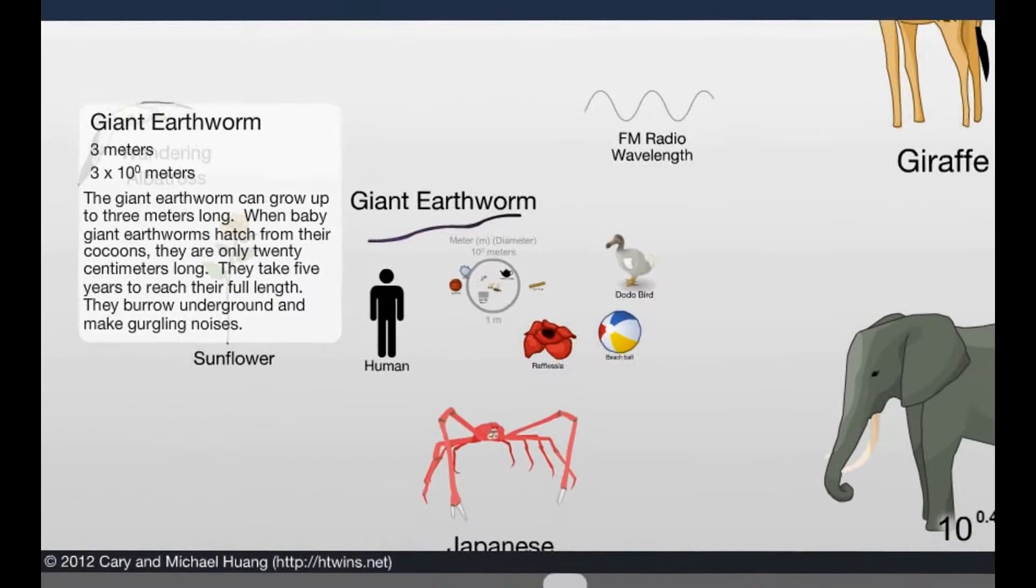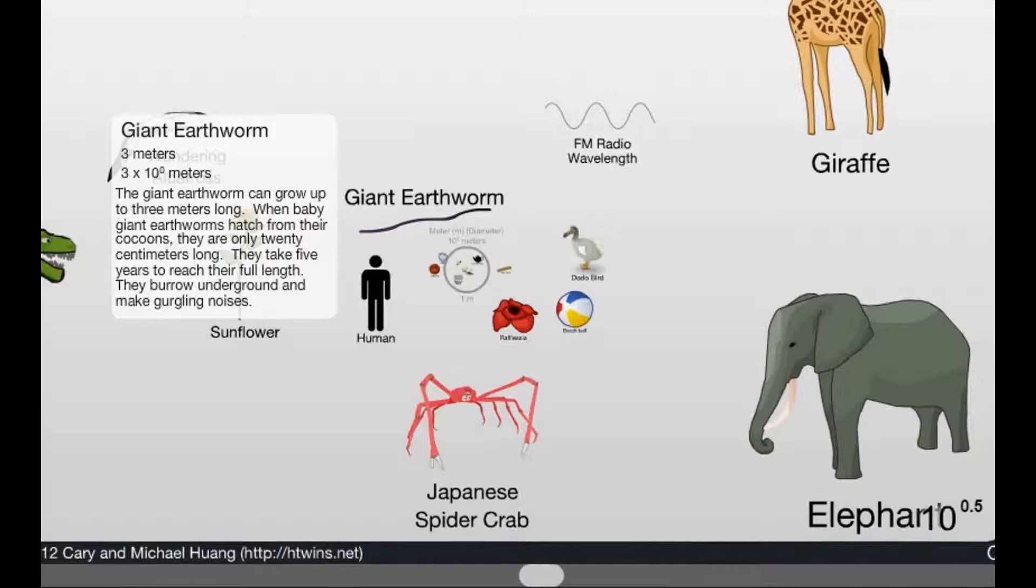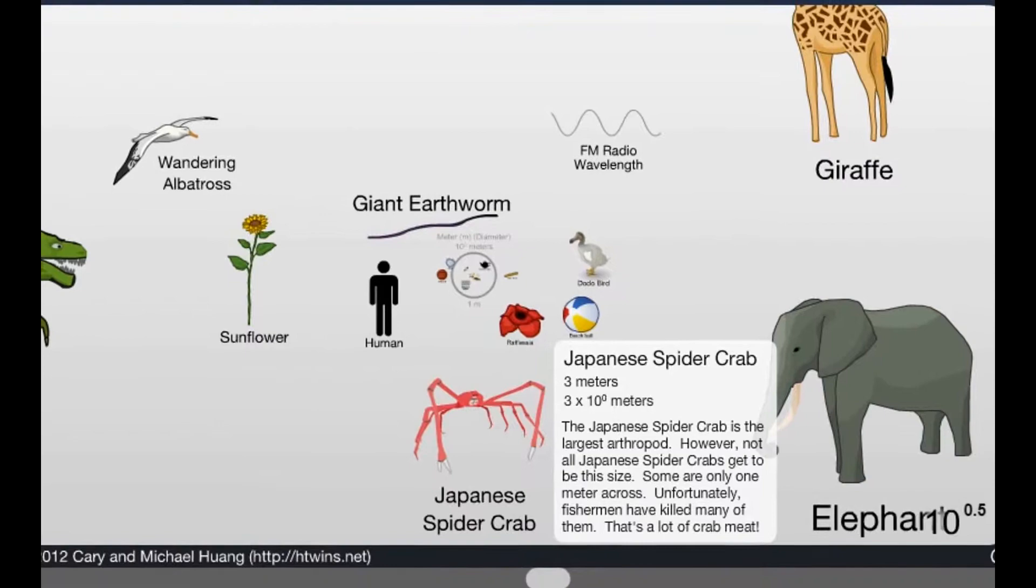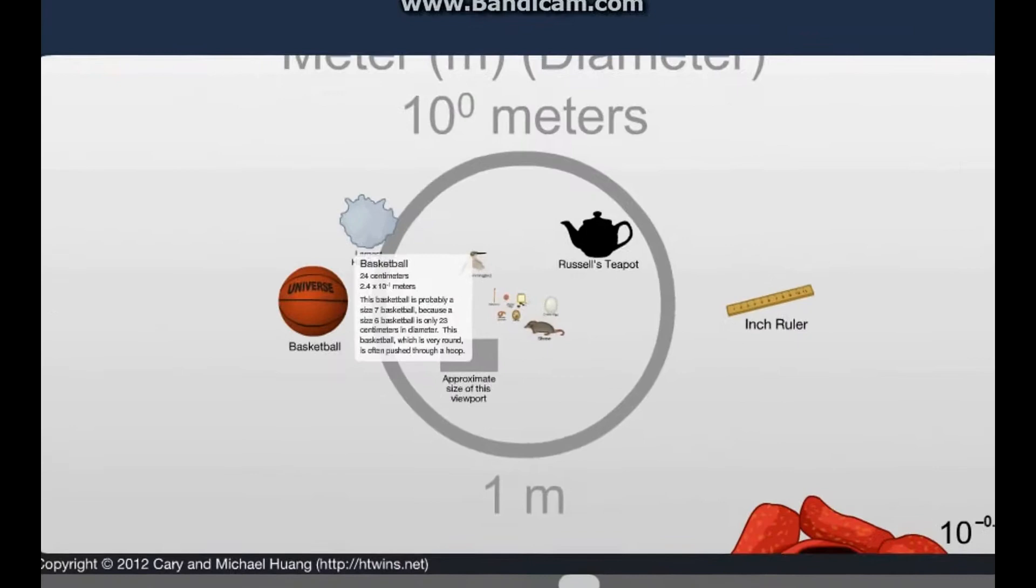Jesus Christ, a giant earthworm. Look at this thing. It's huge. Three meters. That thing is huge. But then you got something like this, a Japanese spider crab. Those things are gigantic. Those things scare the crap out of me. But let's go the other way.